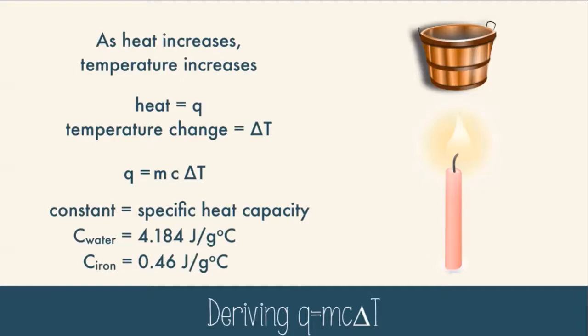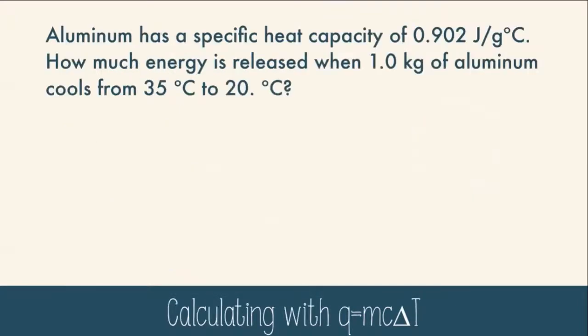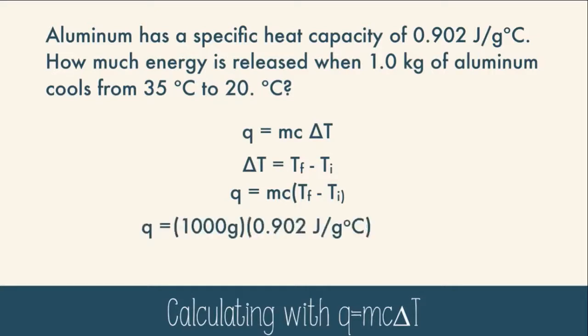Let's see a situation where we would use it. Aluminum has a specific heat capacity of 0.902 J/g·°C. How much energy is released when one kilogram of aluminum cools from 35°C to 20°C? Using Q = mcΔT, where ΔT = final minus initial temperature: mass is 1,000 grams, C is 0.902 J/g·°C, and ΔT is 20 − 35 = −15. Our final answer is −13,500 joules. The negative number means heat is being released — this is exothermic, consistent with cooling.